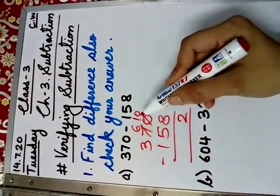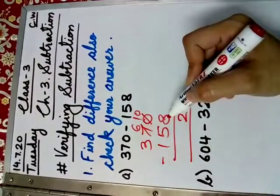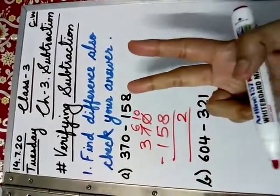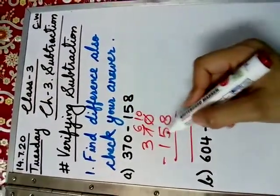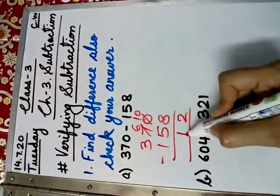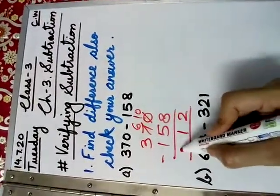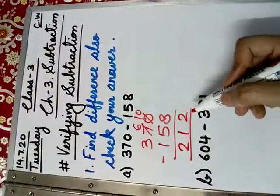Or you take the smaller number. Uske baad aap count karo bigger number tag. From 8, 9, 10. How many fingers are raised? 2. That is your answer. 6 minus 5? 1. 3 minus 1? 2. This is your difference.